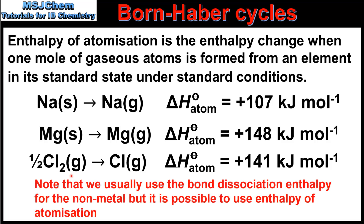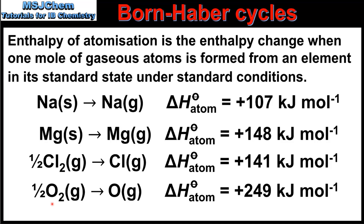Our next example is for chlorine. In this equation we have half a mole of gaseous chlorine molecules, because we only need half a mole to form one mole of gaseous chlorine atoms. The last example is for oxygen — once again we only need half a mole of gaseous oxygen molecules to form one mole of gaseous oxygen atoms. The enthalpy of atomization for chlorine and oxygen is half the value of the bond dissociation enthalpy, due to the difference in their definitions.